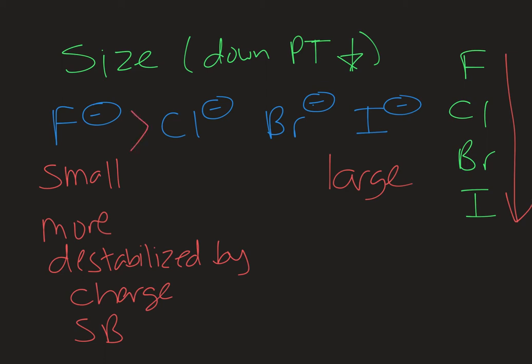So fluoride is a stronger base than chloride than bromide than iodide. Iodide being the largest and so would be the weakest base in this series. And you could apply this to any series of bases that are in one column. So the main factor influencing basicity in that case would be the size of the atom.